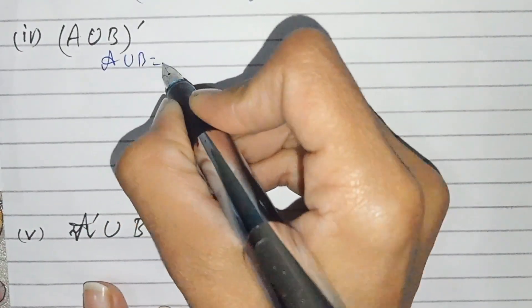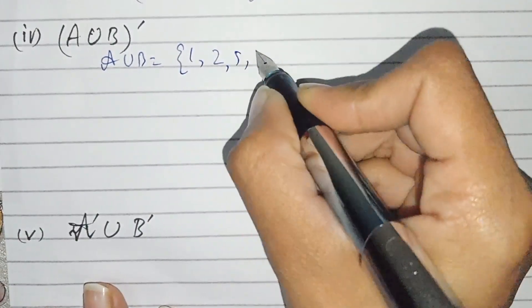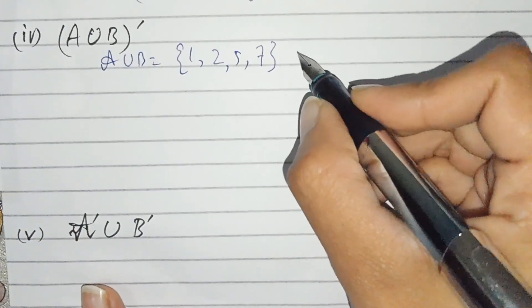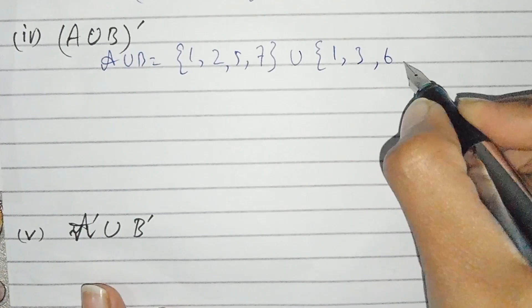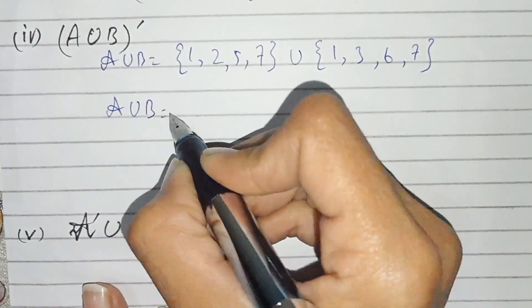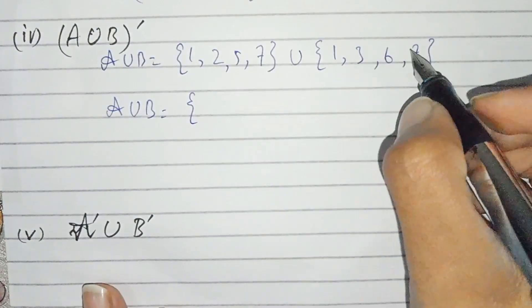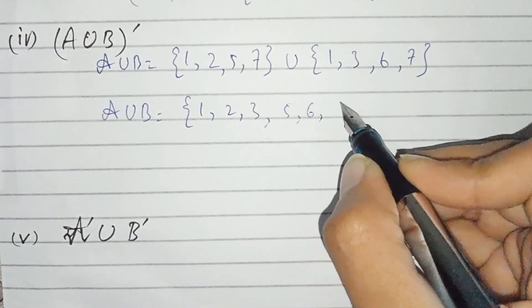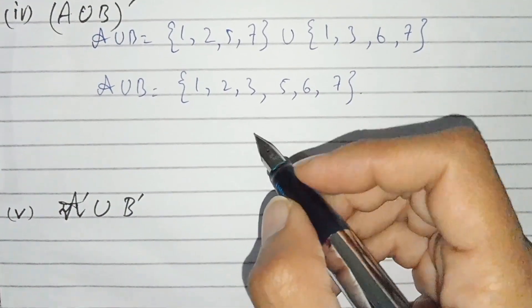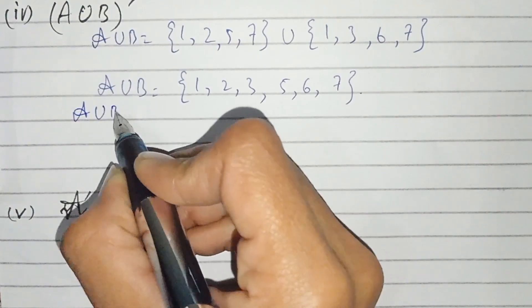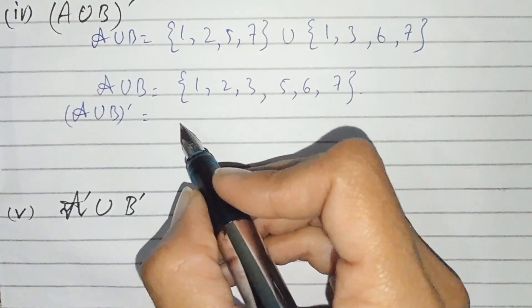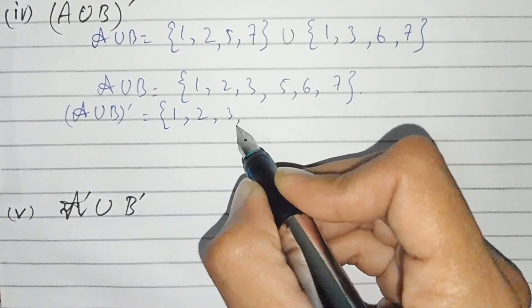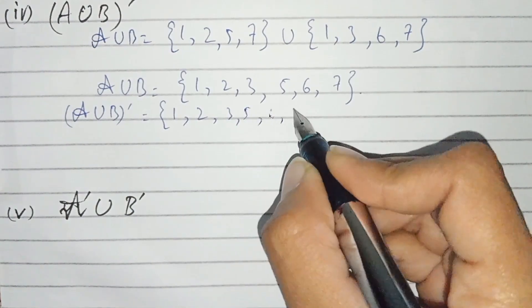Part number four: (A union B) complement. First we find A union B. A is {1,2,5,7} and B is {1,3,6,7}. By combining, we get {1,2,3,5,6,7}. Now we take the complement: (A union B) complement, and U is {1,2,3,4,5,6,7}.